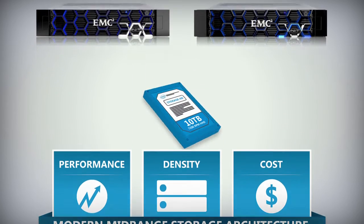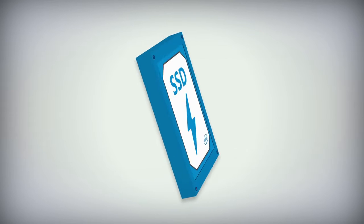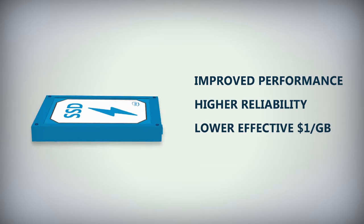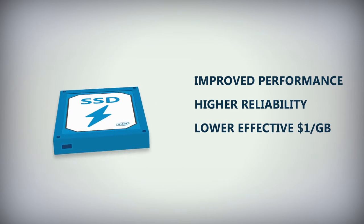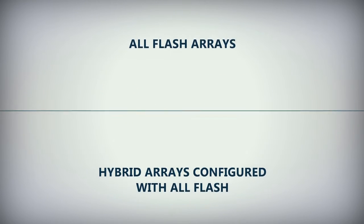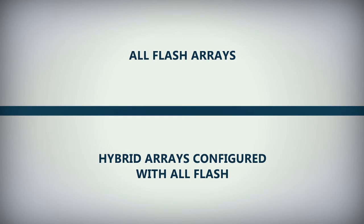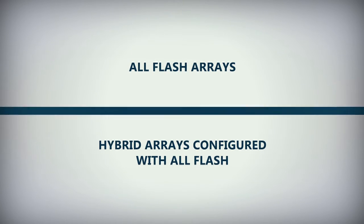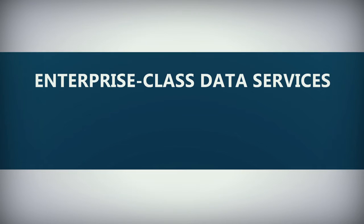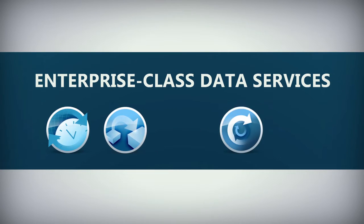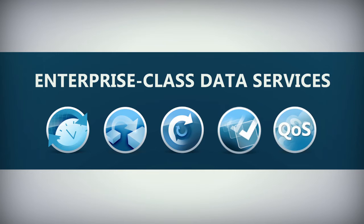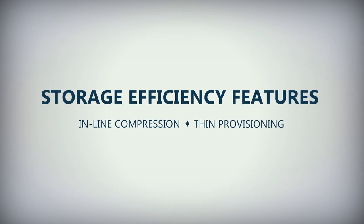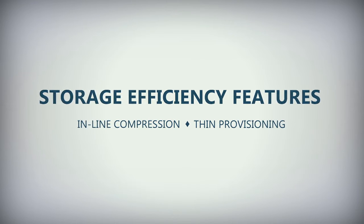As a result, vendors are aggressively flash-optimizing their offerings to provide improved performance, higher reliability, and lower effective dollar per gigabyte. The distinction between all-flash arrays and hybrid arrays configured with all flash has become narrower, as more and more arrays offer enterprise-class data services such as snapshots, clones, encryption, replication, and quality of service, as well as storage efficiency features like inline compression and thin provisioning.